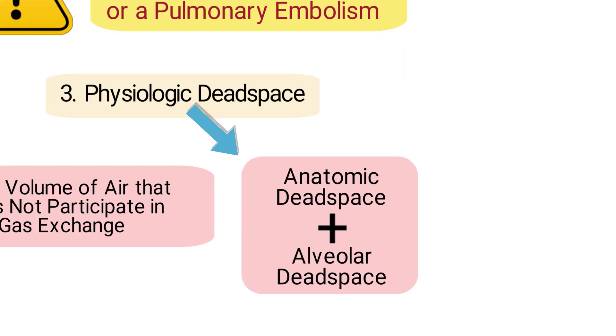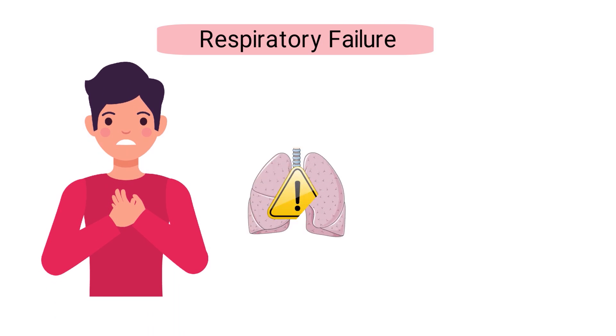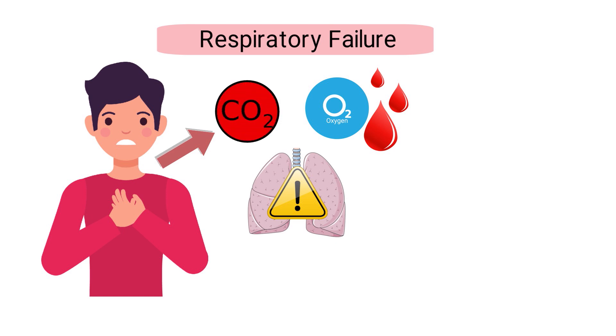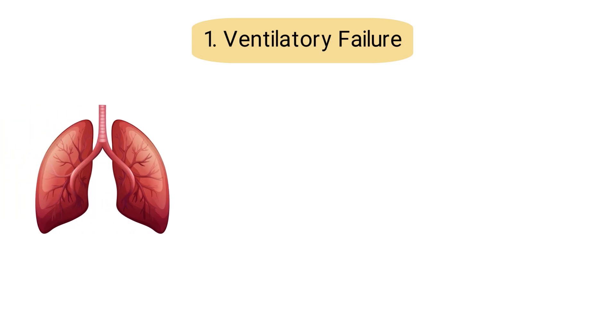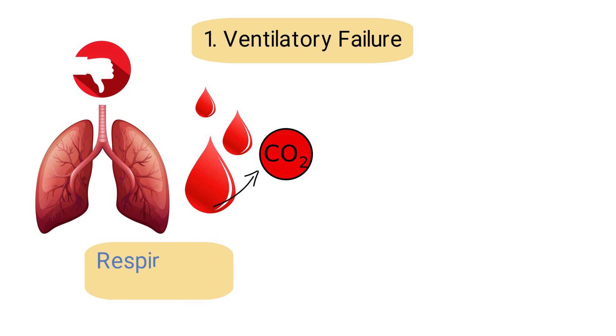Switching gears, let's talk about respiratory failure. Respiratory failure occurs when the lungs are unable to adequately oxygenate the blood or remove carbon dioxide from the body. There are two primary types: ventilatory failure and oxygenation failure. Ventilatory failure is the inability of the lungs to remove carbon dioxide from the blood, which results in respiratory acidosis.